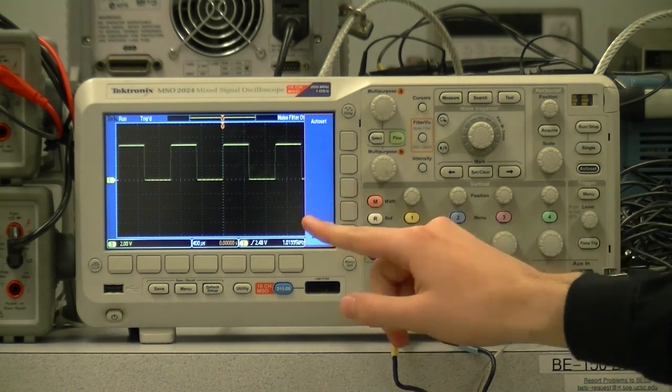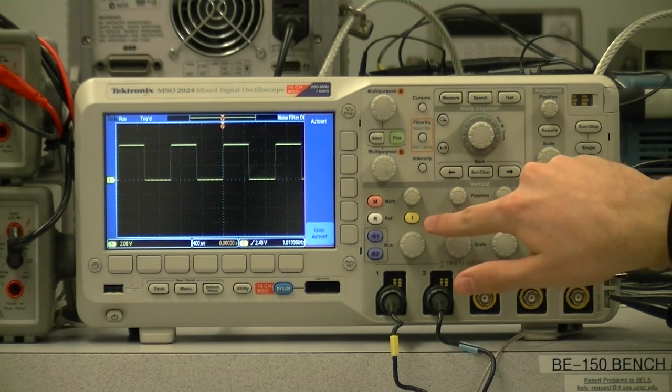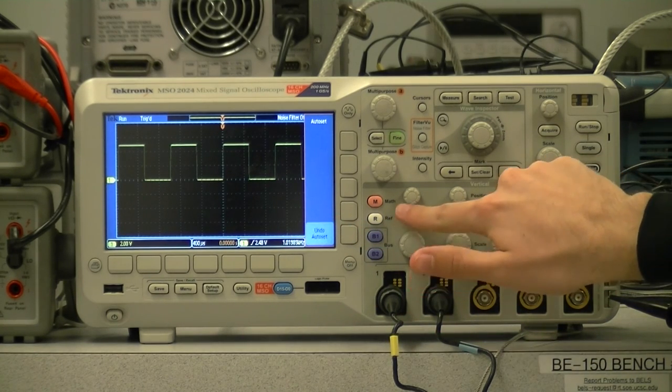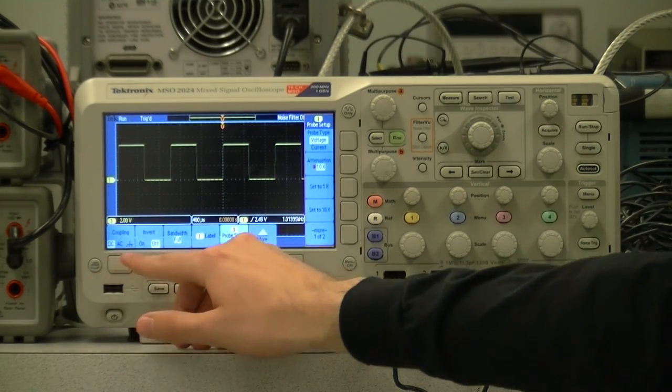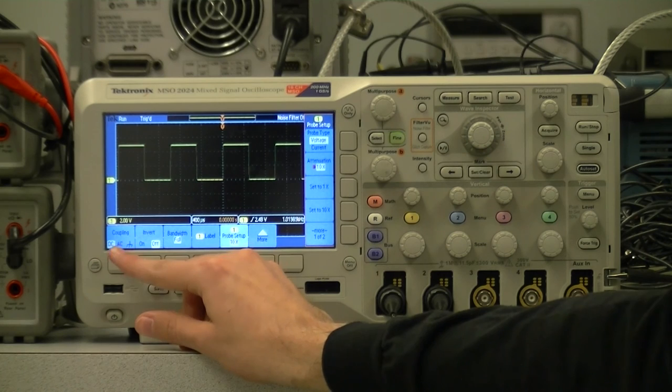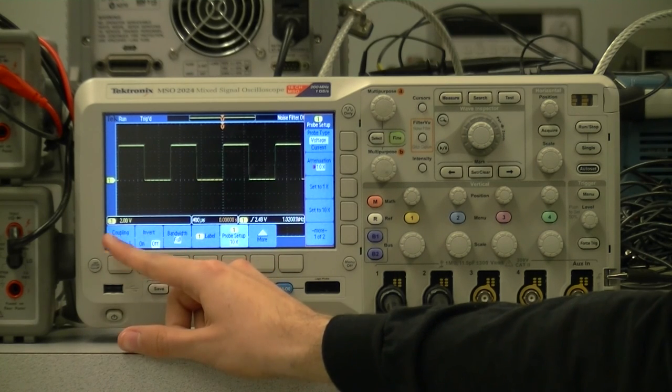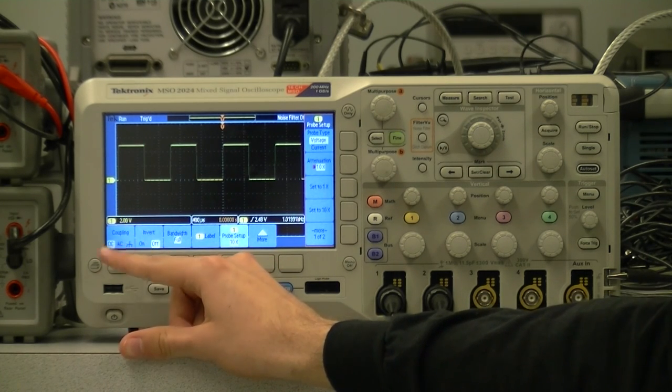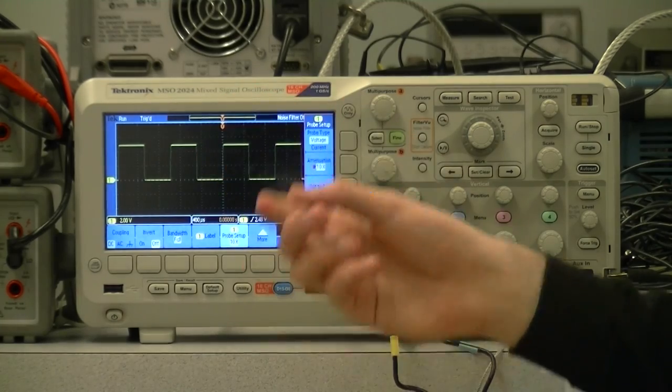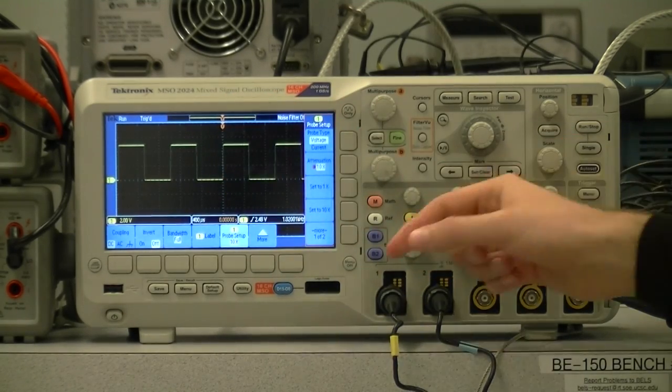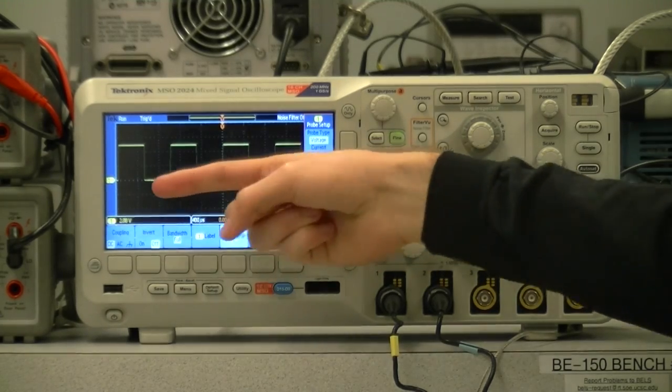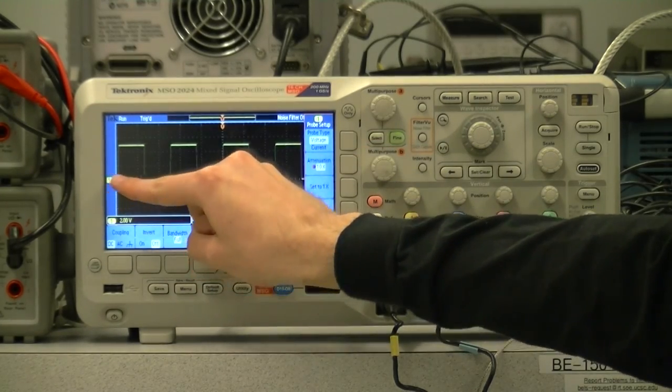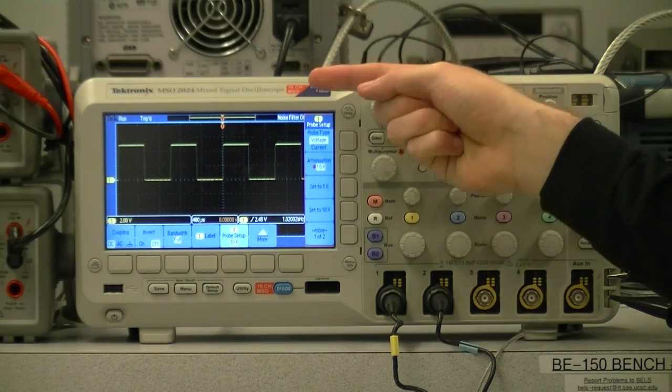To adjust the settings for a specific channel, push the button colored for that channel. So I will now be adjusting the settings for channel 1. Now this brings up a menu of several different settings. The first setting is coupling with three options: DC, AC, and ground. The DC coupling measures the actual voltage of the signal relative to ground. So this is a square wave signal, which we can see going from this marker here, which is ground, to some voltage.